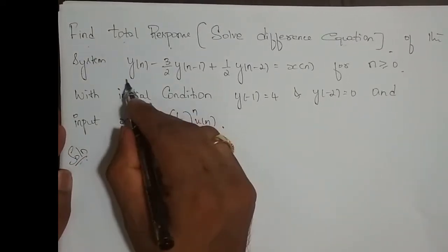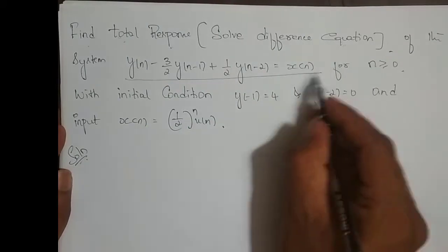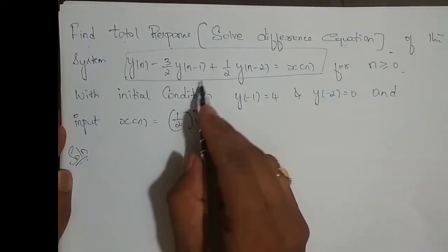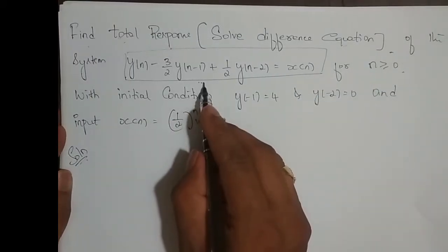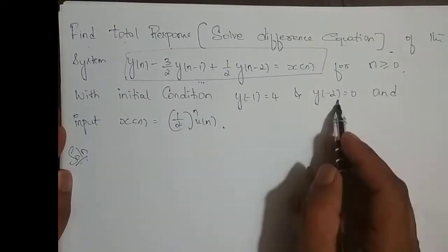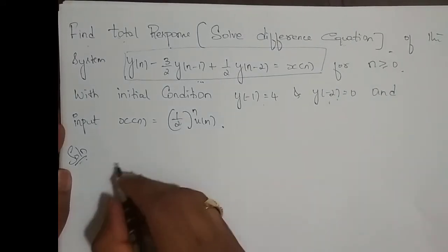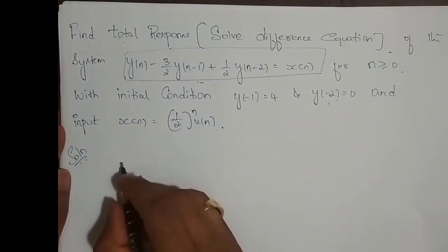Since the total response requires considering both initial conditions as well as the input, and since the initial conditions are given, I have to take the unilateral Z-transform. I will take the Z-transform of this difference equation — specifically the unilateral Z-transform, because the initial conditions are given.